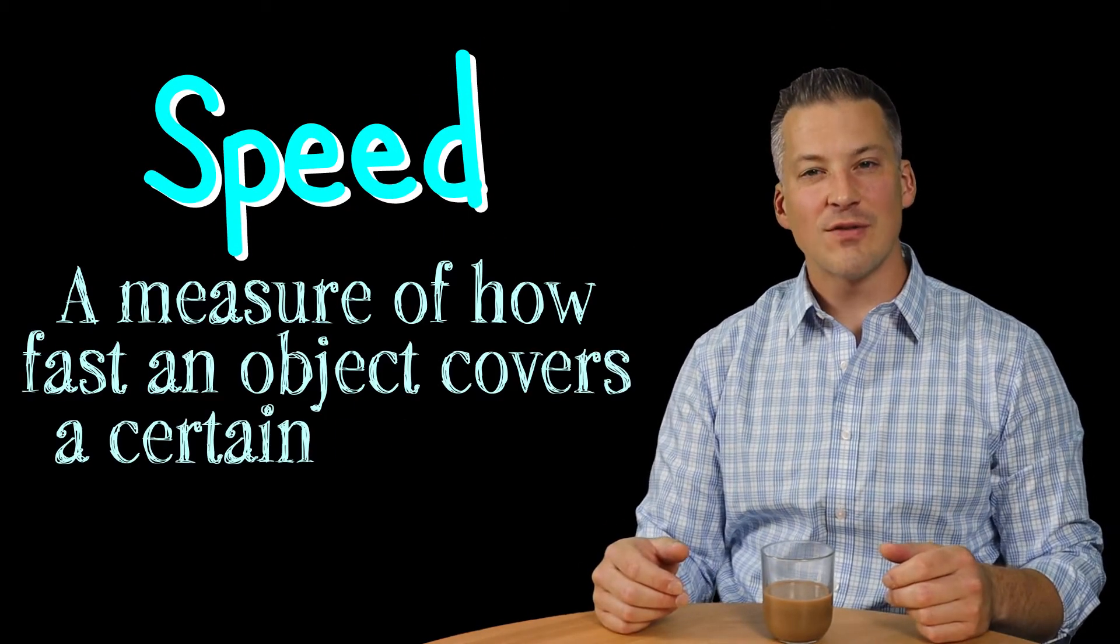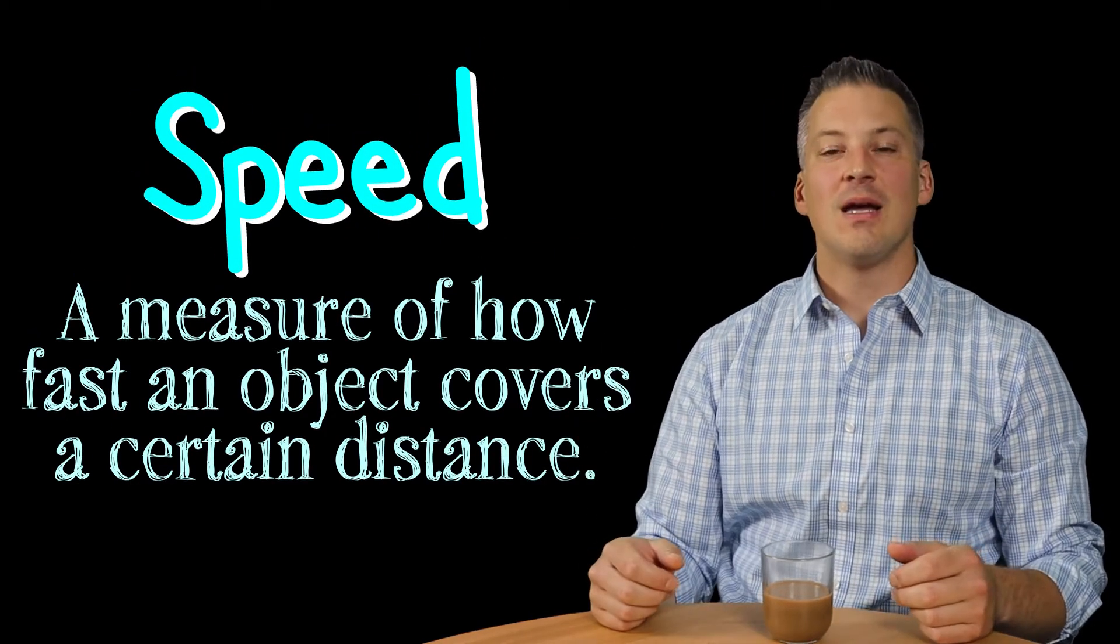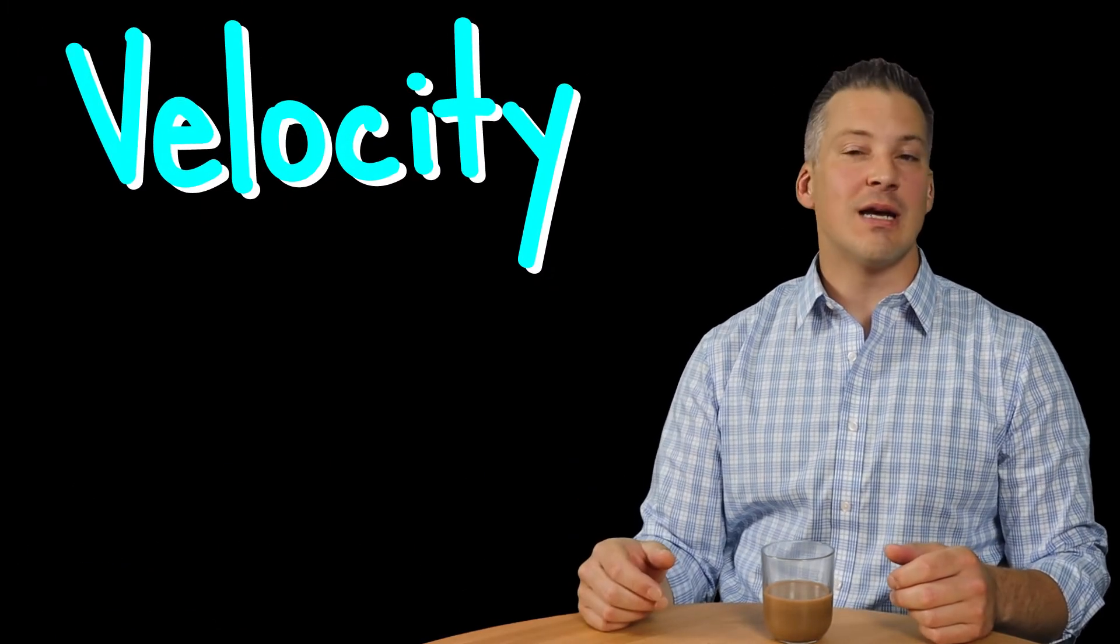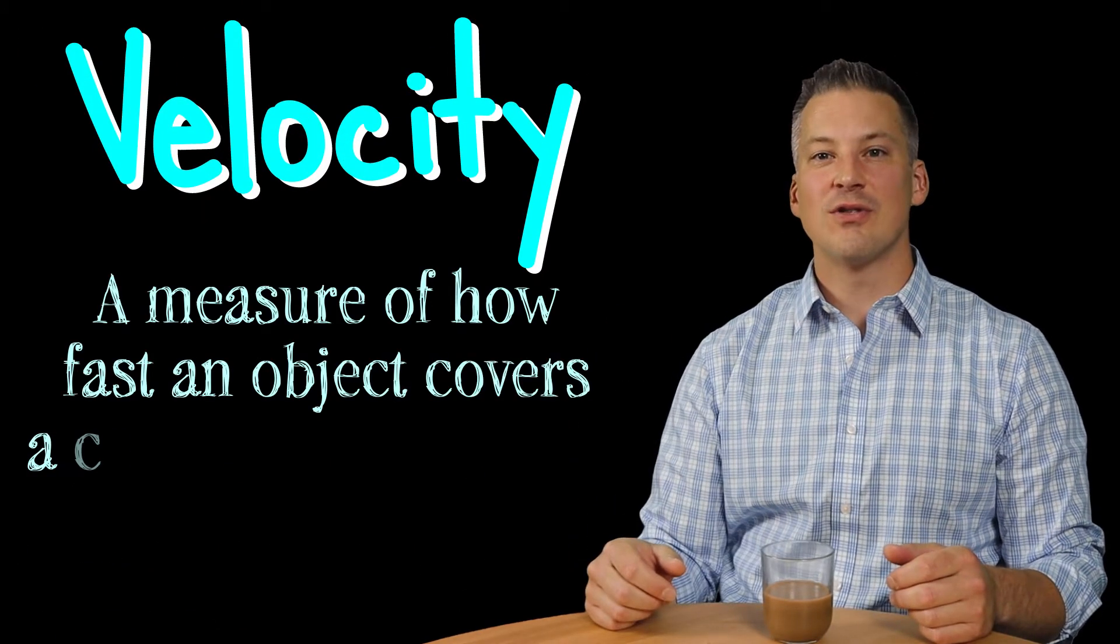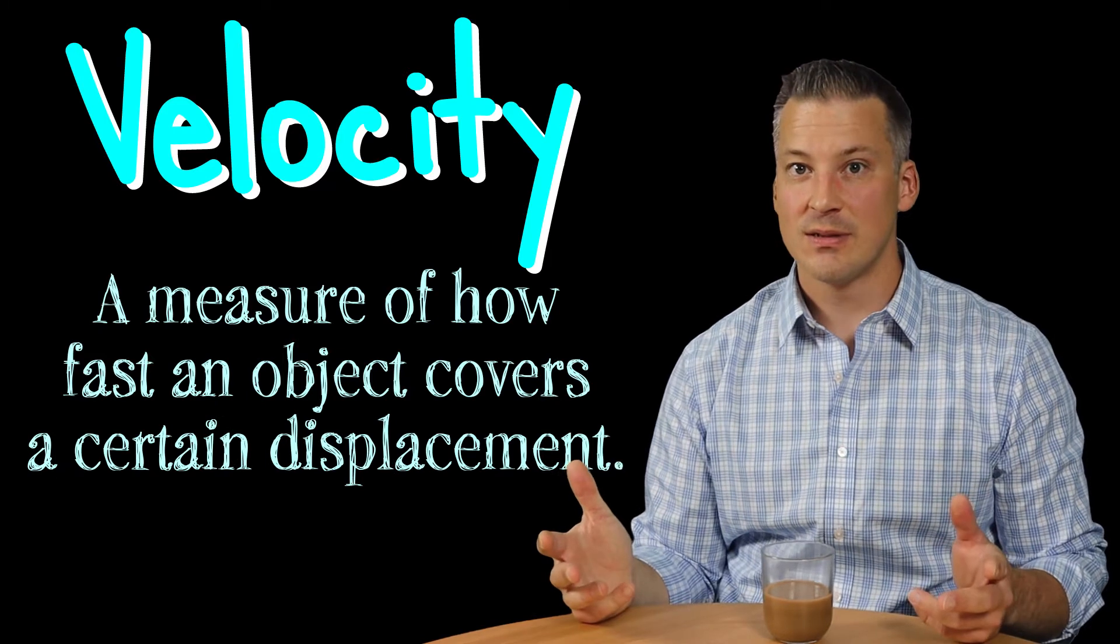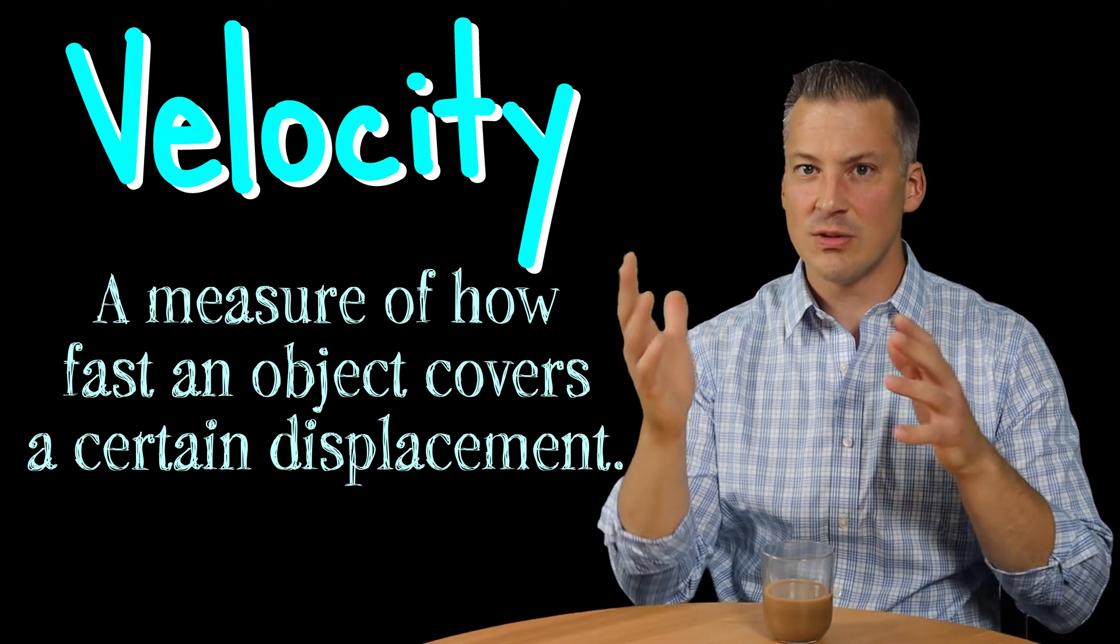Well, it turns out that speed is basically a measure of how fast an object covers a certain distance. And velocity, on the other hand, is how fast an object covers a certain displacement. Okay, so you've got to know the difference between distance and displacement in order to really understand speed and velocity.